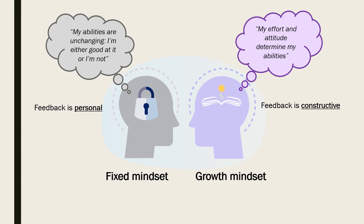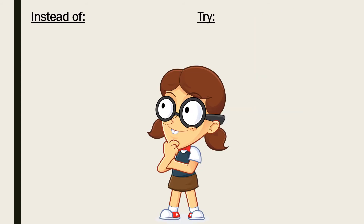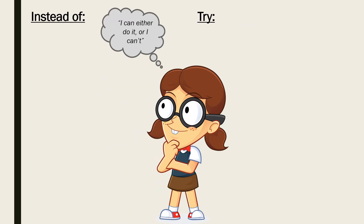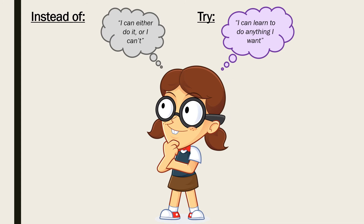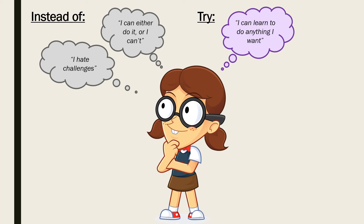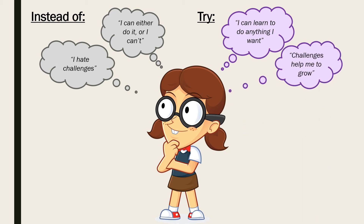As Abraham Maslow said, in any given moment we have two options: to step forward into growth, or step back into safety. Therefore, when receiving draft feedback, try and replace 'I can either do it or I can't' with 'I can learn to do anything I want.' Instead of 'I hate challenges,' try 'challenges help me to grow.'